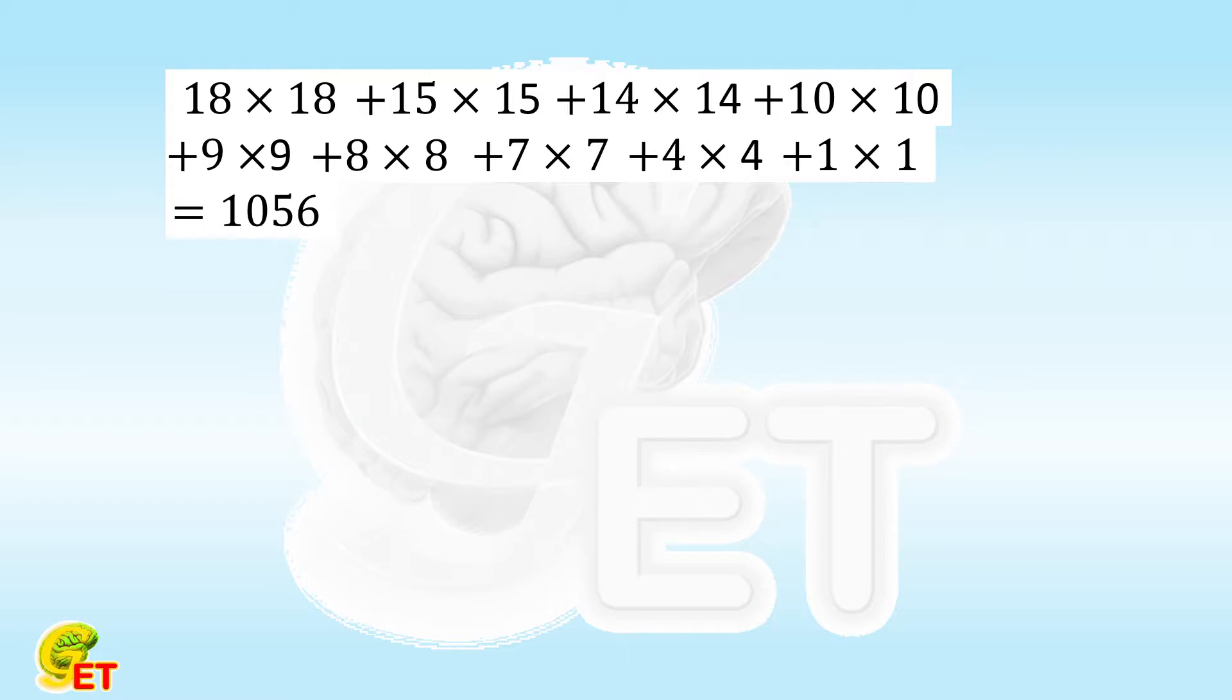By performing prime decomposition, we know 1056 equals 33 multiplied by 2 to the power of 5. This equals the height A times the width B.